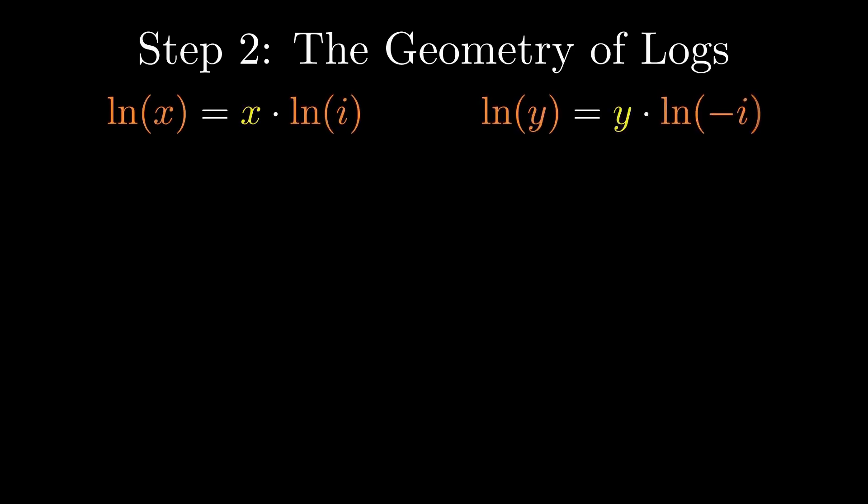In the previous step, we reduced the infinite power tower to a single equation: the natural log of X equals X times the natural log of i. And the same structure appears when the base is minus i. So everything now depends on one question: What is the natural logarithm of i?